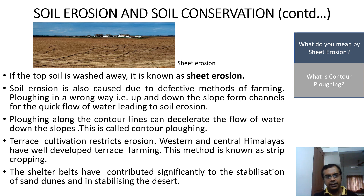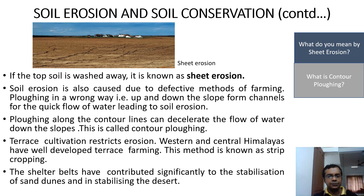What is meant by contour plowing? Plowing along the contour lines can decelerate the flow of water down the slopes — this is known as contour plowing. Terrace cultivation also restricts erosion; the western and central Himalayas have well-developed terrace farming. This method of growing different crops in alternate strips is known as strip cropping. Shelter belts have contributed significantly to the stabilization of sand dunes and stabilizing the desert.